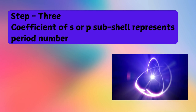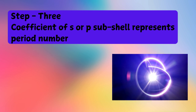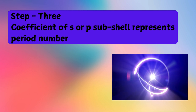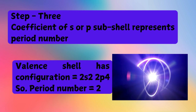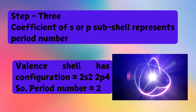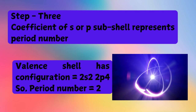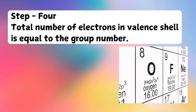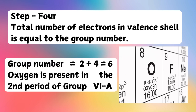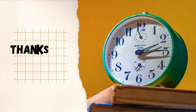Step number 3: The coefficient of the S or P subshell represents the period number. The valence shell configuration equals 2s²2p⁴, so the period number equals 2. Step number 4: The total number of electrons in the valence shell is equal to the group number. Group number equals 2 plus 4 equals 6. Oxygen is present in the second period of Group 6A.